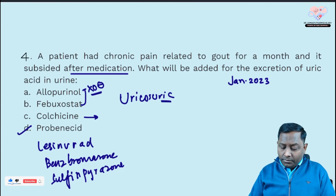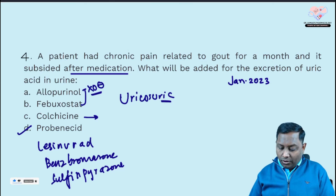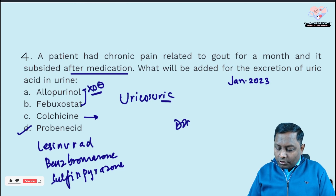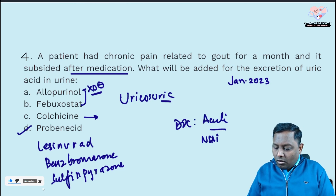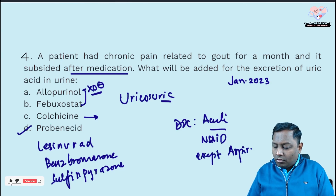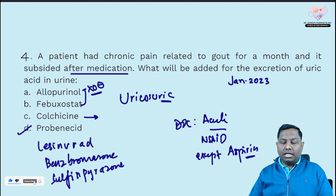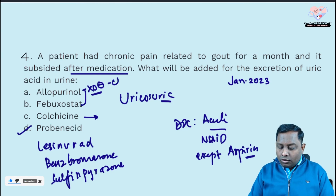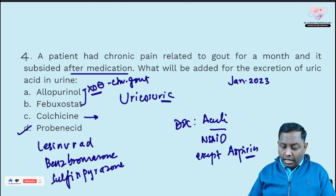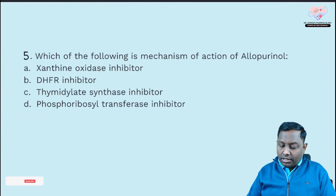Colchicine can be utilized in refractory or non-responsive cases of acute gout. Probenecid is the uricosuric agent among the given choices. For acute gout, all NSAIDs can be used — except aspirin, which is another MCQ. For chronic gout: allopurinol or febuxostat, and uricosuric agents include probenecid, lesinurad, benzbromarone, and sulfinpyrazone.